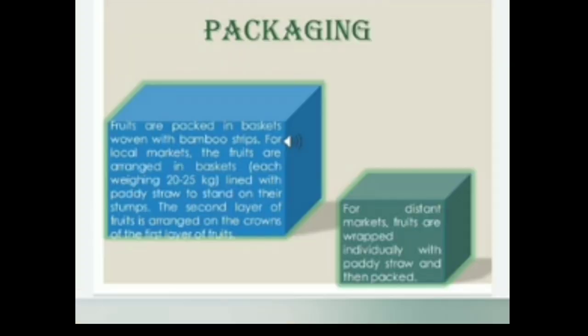Packaging: Fruits are packed in baskets woven with bamboo strips. For local markets, the fruits are arranged in baskets each weighing 20 to 25 kg, lined with paddy straw to stand on their stumps. The second layer of fruit is arranged on the crowns of the first layer. For distant markets, fruits are wrapped individually with paddy straw and then packed.